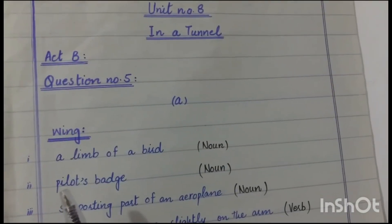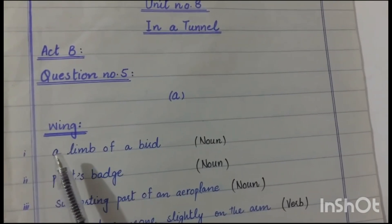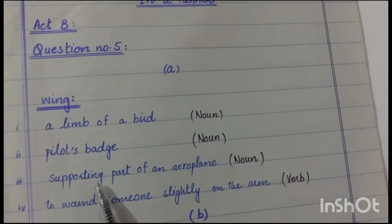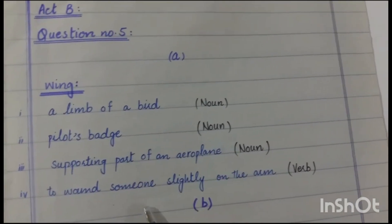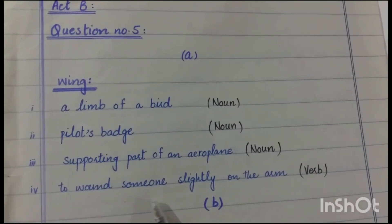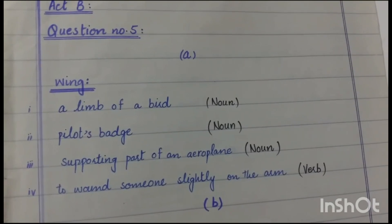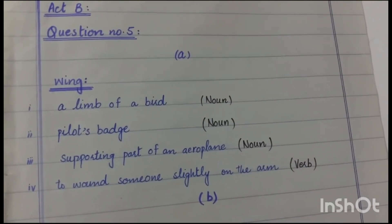The first word is wing. Wing as a noun means a limb of a bird, pilot's badge, and supporting part of an aeroplane. Wing as a verb means to wound someone slightly on the arm. For example, the soldier was winged by a stray bullet.